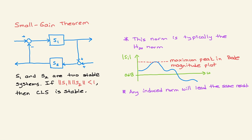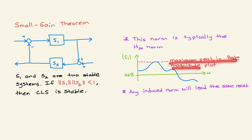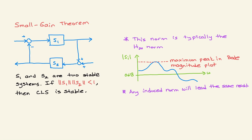For transfer functions, these norms are typically H-infinity norms. The H-infinity norm — if you plot the Bode plot for S1 and S2, looking at the magnitude plot — is the maximum peak in the Bode magnitude plot. It can be less than or more than zero decibels. For any such system, the maximum peak is the H-infinity norm.